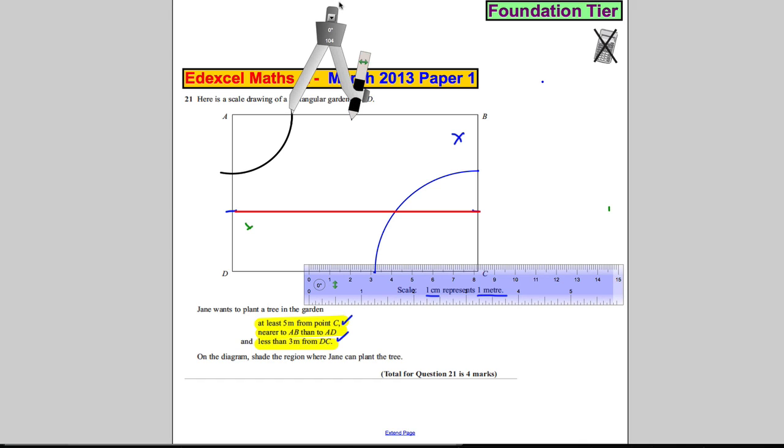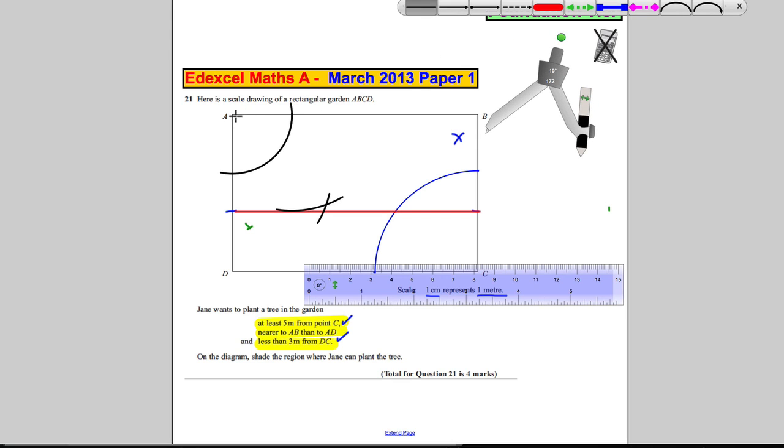And swivel that round and move it out a little bit more. You're going to draw an arc there, and you move this over here, and you're going to draw another arc there. Now a line between there and there will cut these exactly in half. So that is the line—that line exactly is halfway between AB and AD.